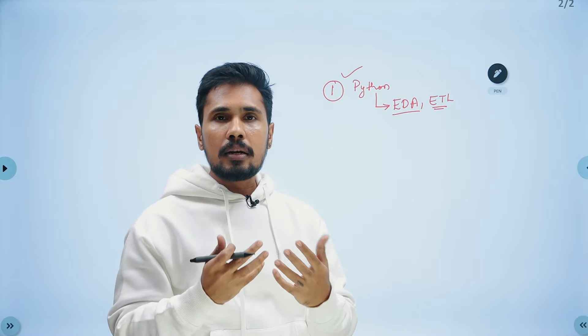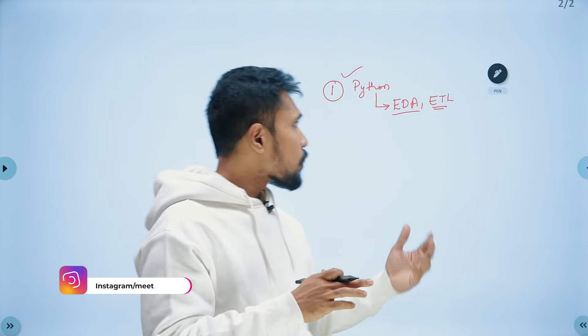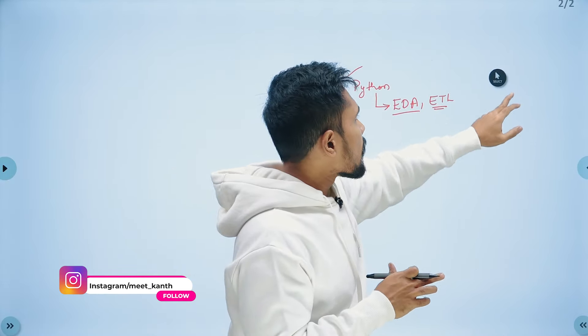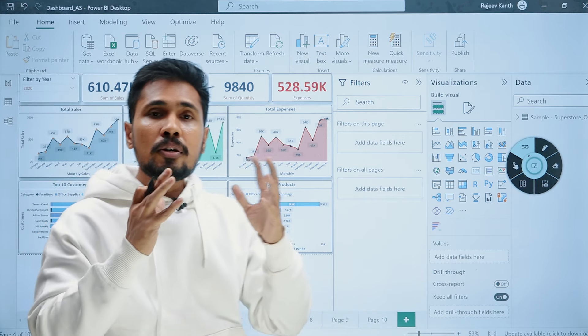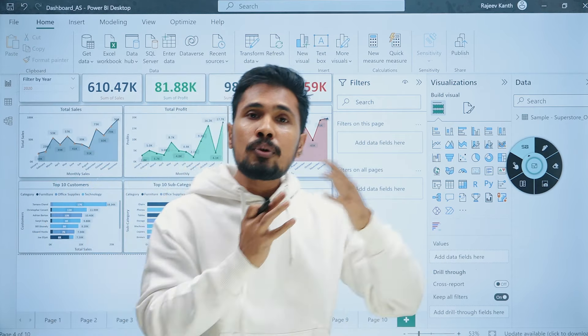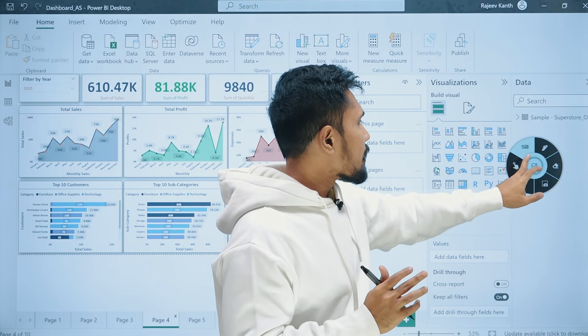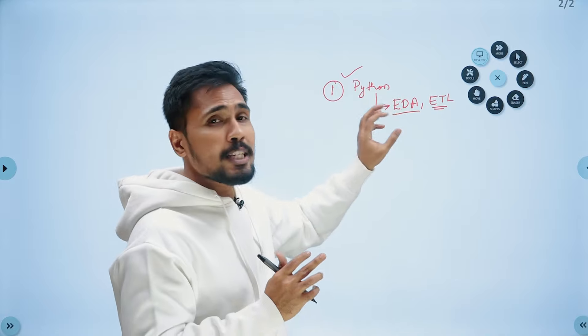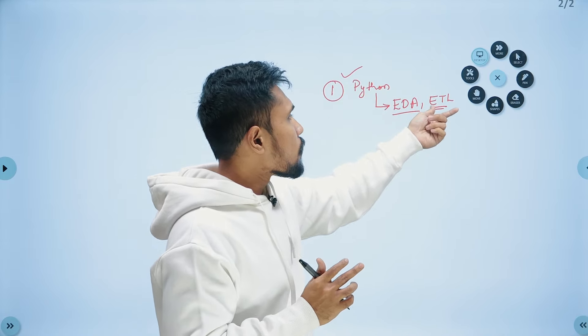Basic statistics includes understanding mean, median, standard deviation, and variance. You need to know when to use mean, when to use median, when to use standard deviation, what is an outlier, and what is anomaly detection. To understand all of that, you need Python knowledge — that is what we call Exploratory Data Analysis, or EDA.